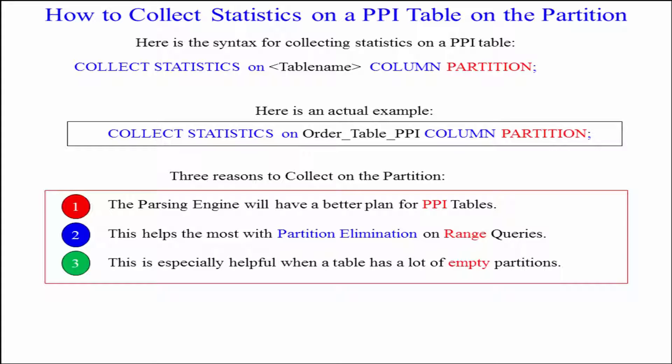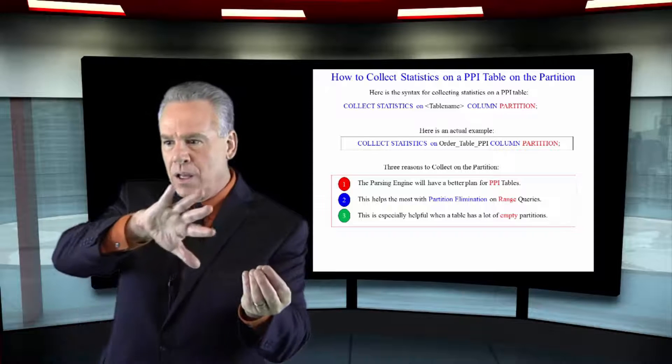Collect statistics on a table name column partition is really the syntax. And I've given you a couple actual examples here. Collect statistics on order table PPI. It's a partitioned primary index table. Column partition.